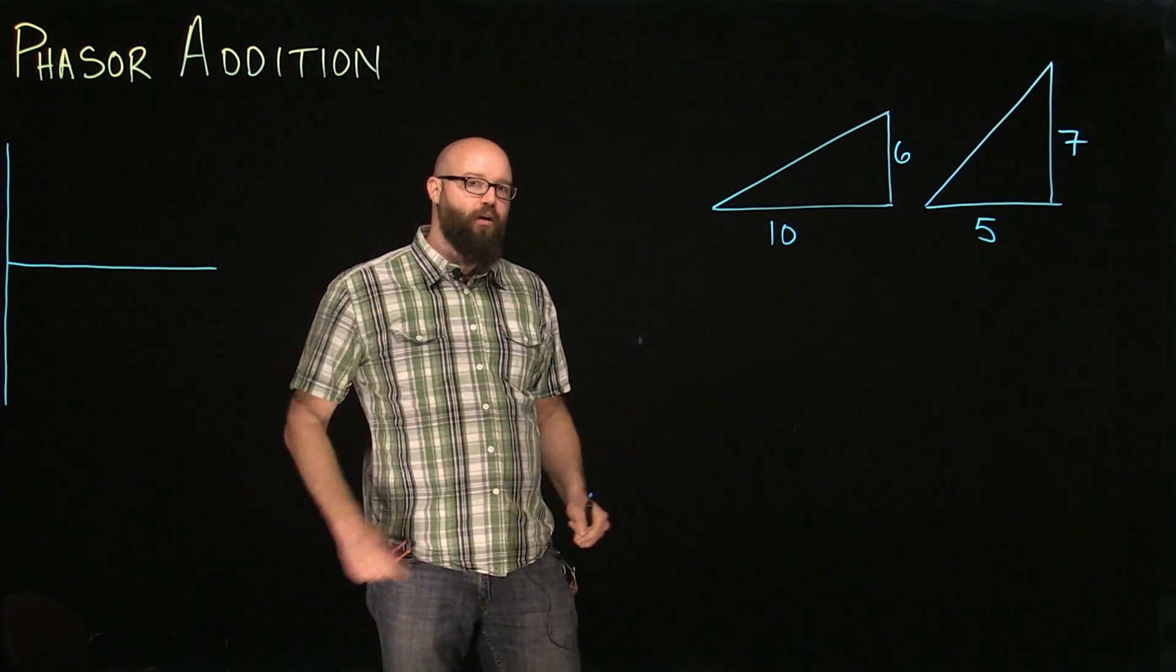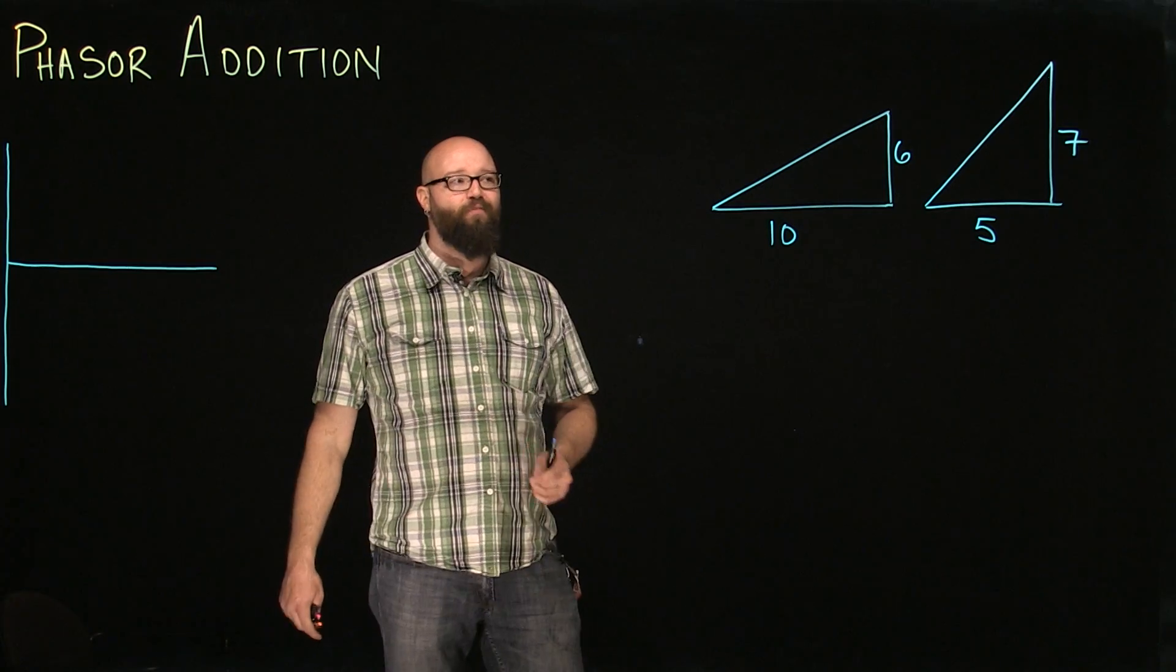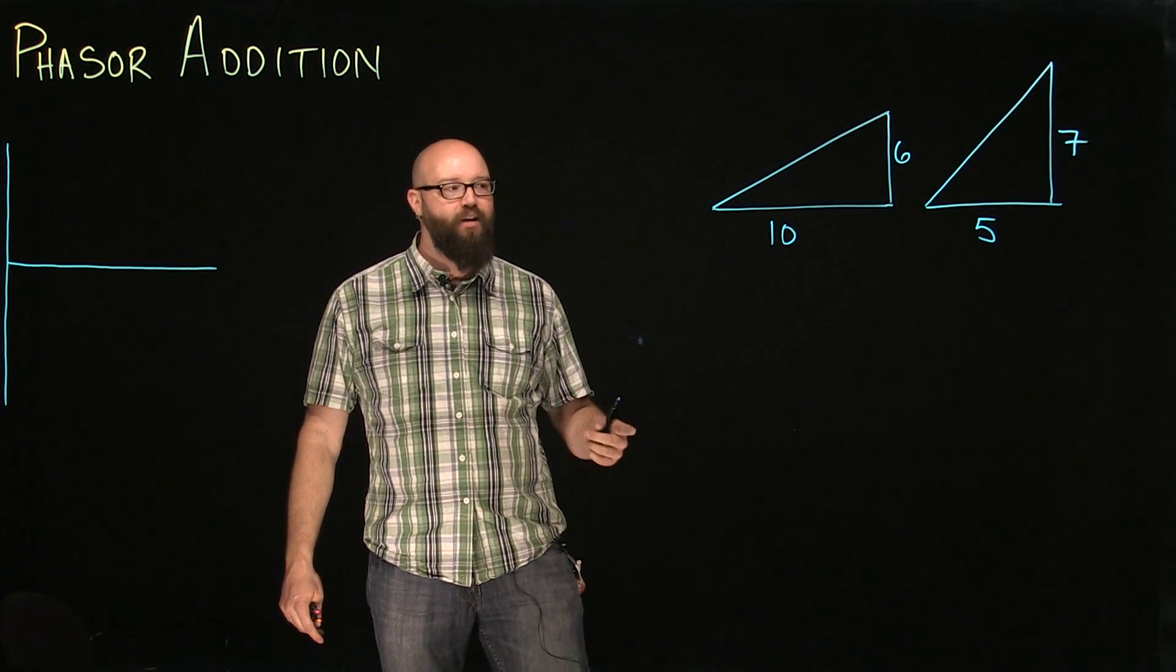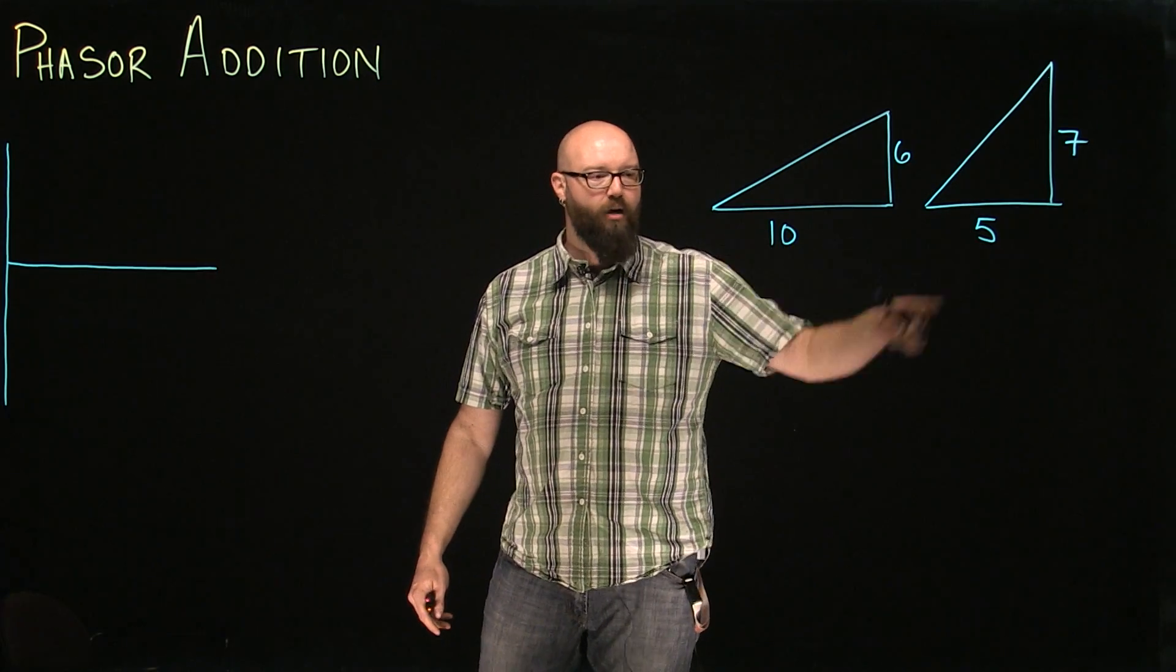One thing about adding triangles, I'm going to call it that for now because we're not going to call them phasors yet, is I can't add things that are at different angles, but what I can do is add similar angles. So, for example,